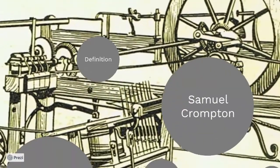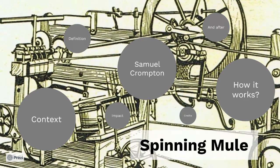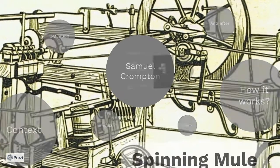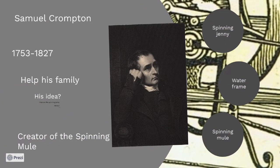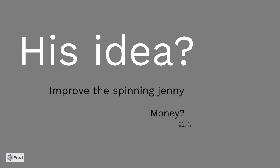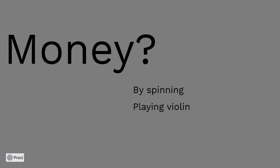Next, I will focus more on the principal subject and make a short presentation about Samuel Crompton. He was an English inventor and pioneer of the spinning industry. He was born in Lancashire in 1753 and died in 1827. When he was still a boy, his father died and he had to contribute to the family resources by spinning yarn. He worked on James Hargreaves's spinning jenny, and had the idea to improve this machine, working on it for five or six years. He earned money by spinning and playing the violin at the Bolton Theatre.